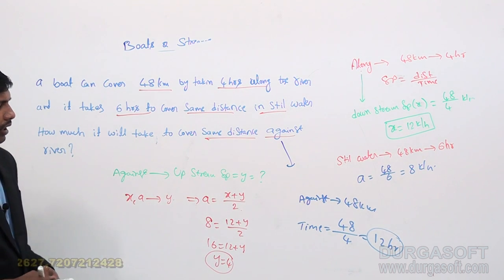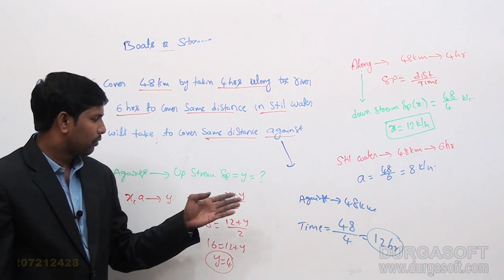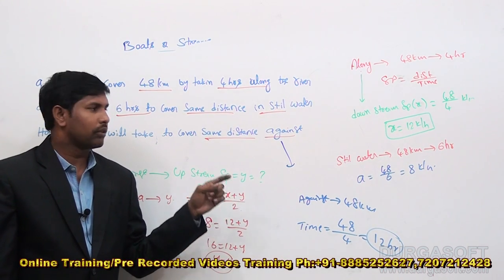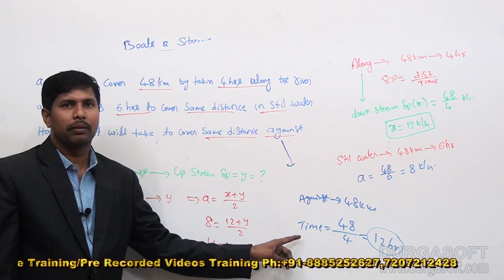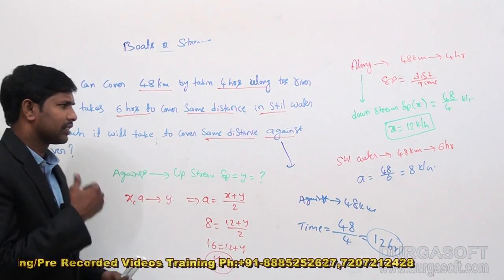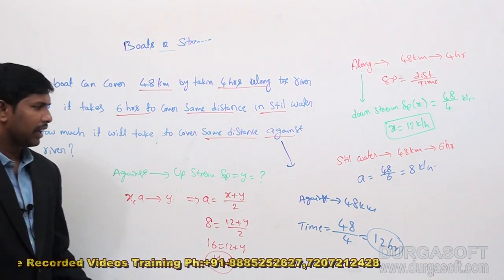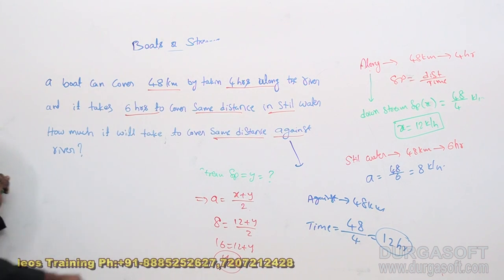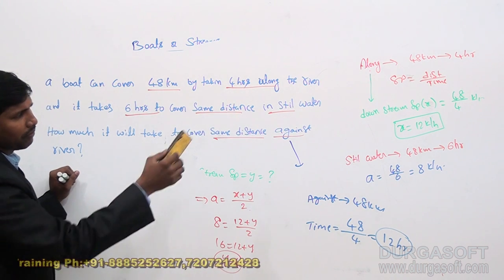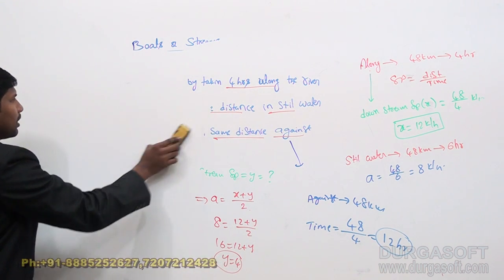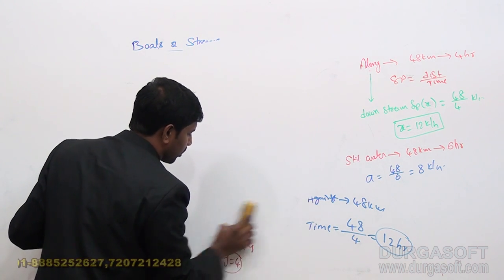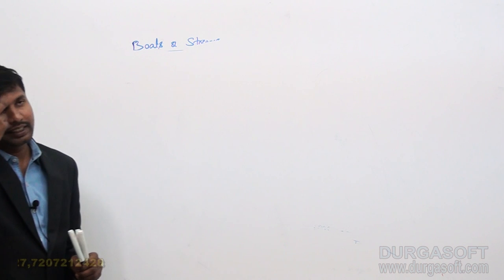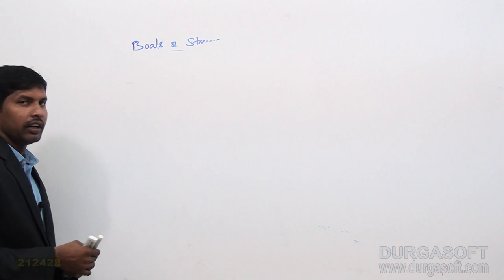It takes 12 hours to cover the same distance against the river. First we calculated the upstream speed because 'against the river' is upstream speed. Once we know the speed, we can find the time using time = distance / speed, whether the distance is the same or any other value. The speed may be given directly or indirectly through distance and time — both approaches use the same relations.